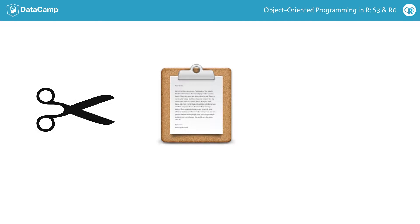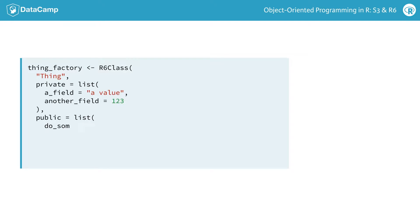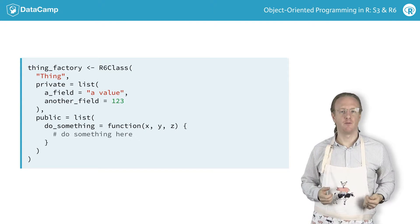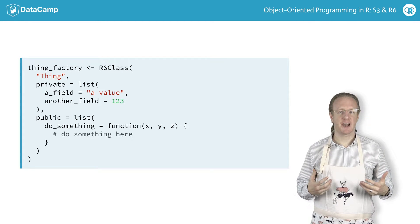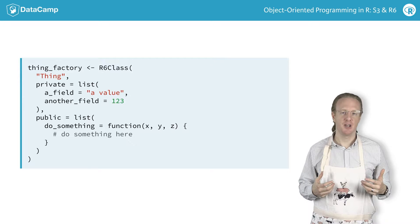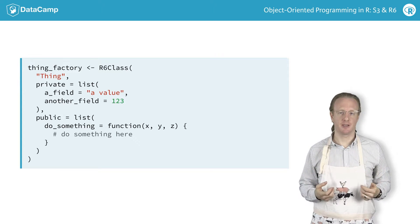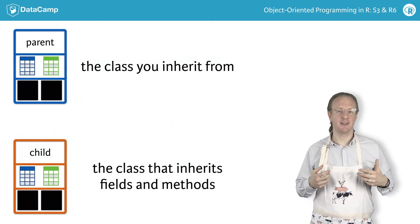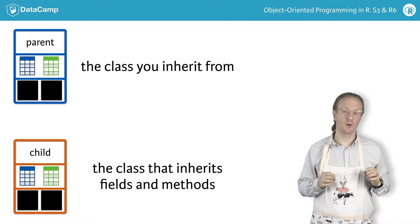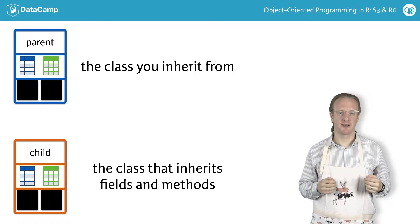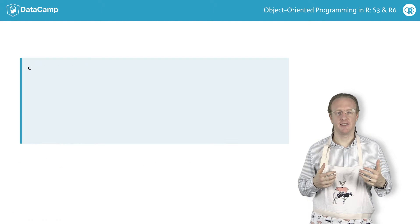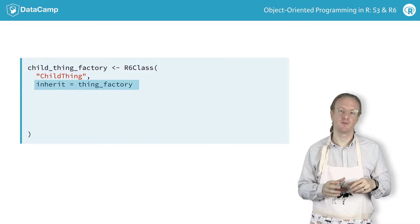R6 achieves this through the concept of inheritance. Let's take a look at how it works. Here's the pattern for an R6 class. To create a class that inherits from this class, you use the inherit argument. The classes that inherit from the original are called child classes. The original class is called the parent of the child classes. Here you see a child thing that inherits from the thing class.